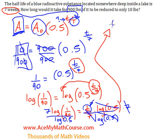We get t equals seven times the log of 1 over 90, all over the log of 0.5.